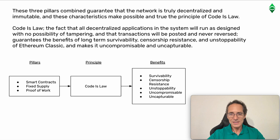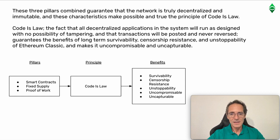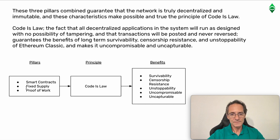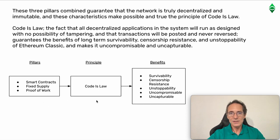Code is Law means that all decentralized applications in the system will run as designed with no possibility of tampering, and that transactions will be posted and never reversed. This guarantees the benefits of long-term survivability, censorship resistance, and unstoppability of Ethereum Classic, and makes it uncompromisable and uncapturable. So these are the pillars of Ethereum Classic: smart contracts provide programmability so you can have decentralized applications inside the secure environment of the blockchain; fixed supply guarantees sound money; and proof of work protects the whole system because it's practically impossible to break, as it would require enormous computing power and electricity. Code is Law, because of these three pillars, is a true statement — not an inspirational statement, but a real and true reality today.